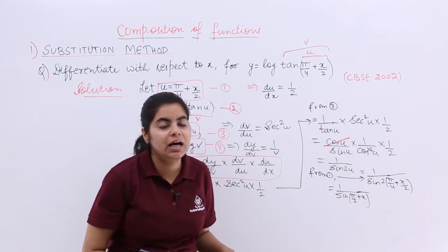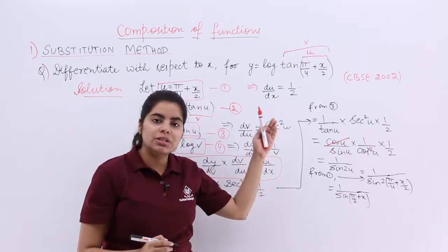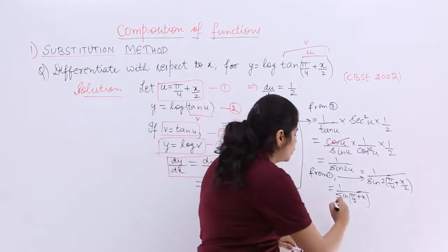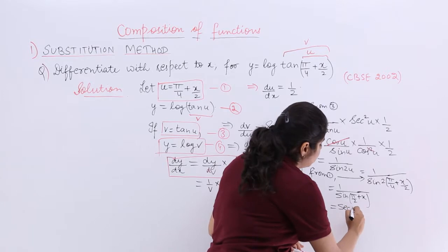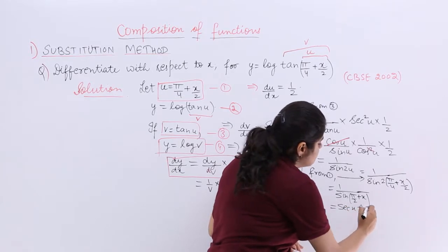Now what is sin 90 plus theta? It is cos theta. So it is 1 upon cos x which gives me secant x. So my answer is secant x.